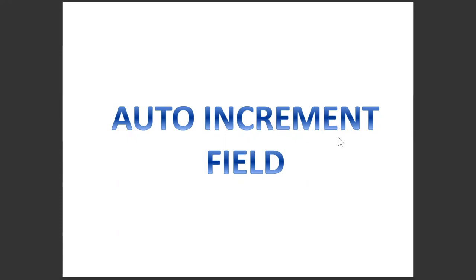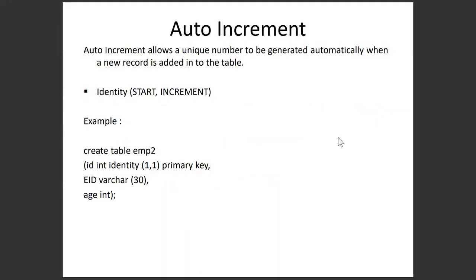If you remember, I was talking about the auto-increment field and whether it is a keyword or not. The auto-increment behavior is handled by the identity function. This identity function takes two arguments: one is the starting point, and the other is by how much you would like to increment. Let's look at a statement to demonstrate this.